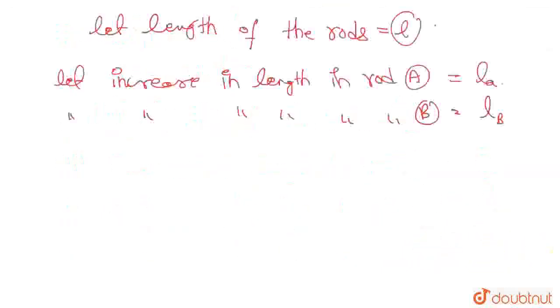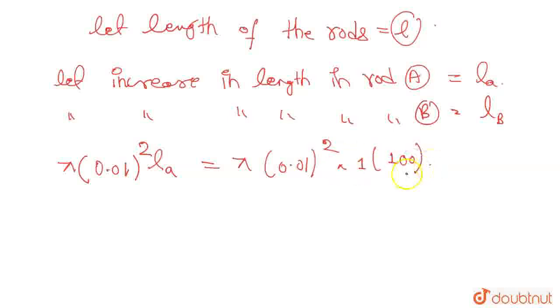So moving forward, using the formula, this will be pi into 0.01 square into LA equals pi into 0.01 square into 1 into 100.